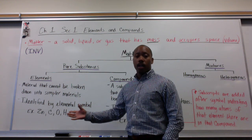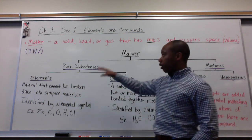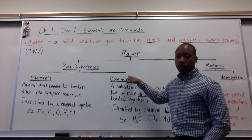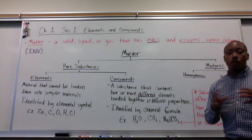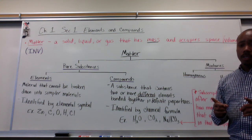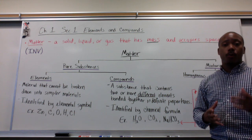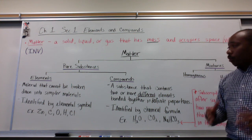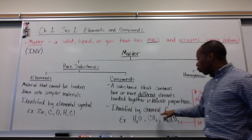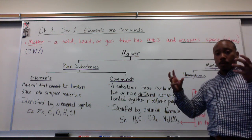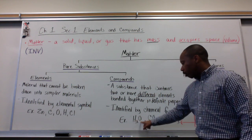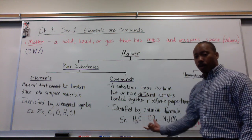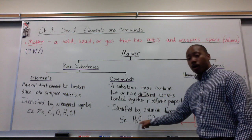These are elements. The other category of pure substances are compounds. Compounds are substances that contain two or more different elements that are bonded together in definite proportions. Now, compounds are identified by a chemical formula. This is when you have two or more elemental symbols together.